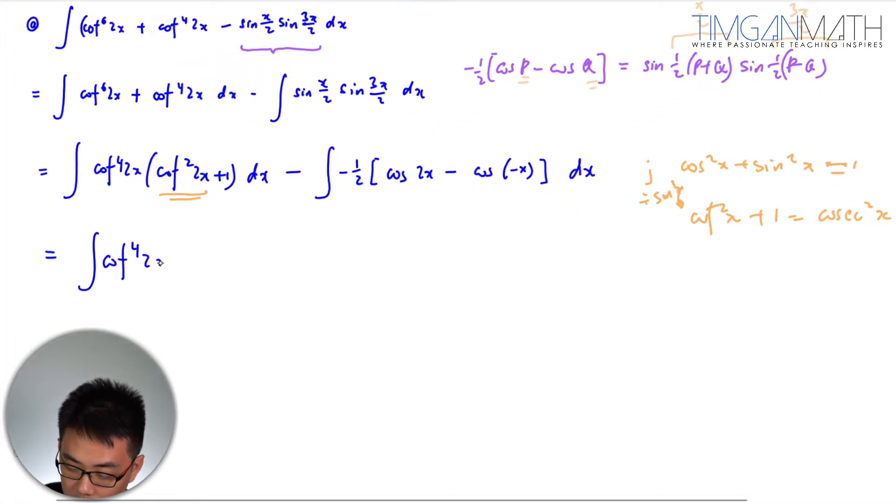So this case here I'm going to just change this to cot 4 squared 2x and that will be cosecant squared 2x dx. All right so this we can use this cancelling method here or the u substitute method.